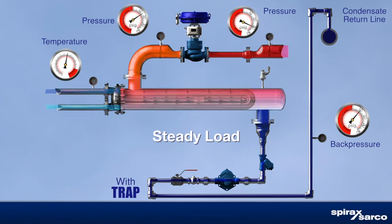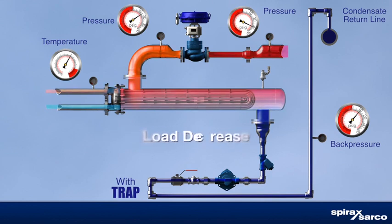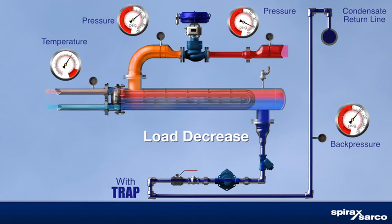Under a steady high load, differential pressure removes the condensate from the heat exchanger. Under reduced heating load, the control valve throttles down, reducing the steam pressure inside the heat exchanger. This also reduces the differential pressure across the steam trap, making the trap unable to remove the condensate.